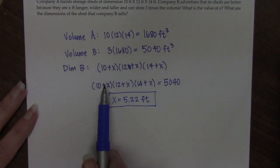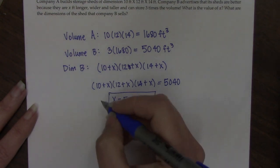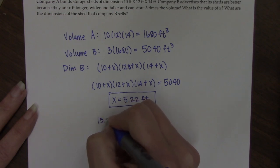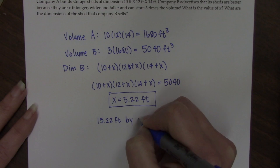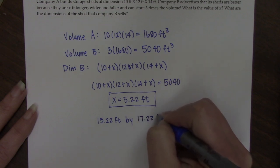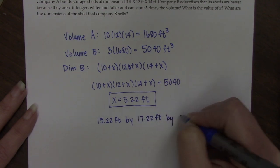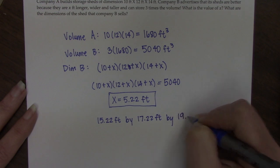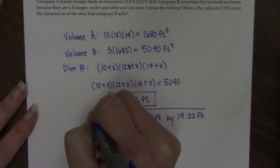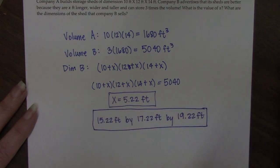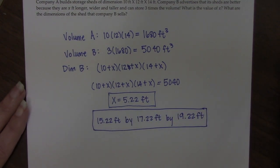The dimensions, I come in by just plugging X into each one of these pieces. So it's 15.22 feet by 17.22 feet by 19.22 feet. And so these are the dimensions of the shed sold by Company B.